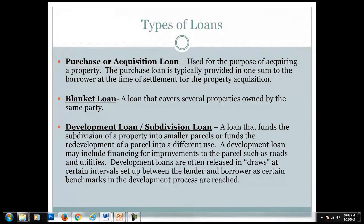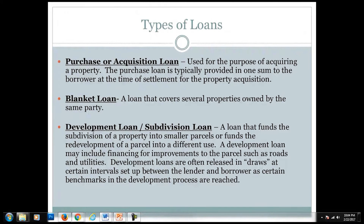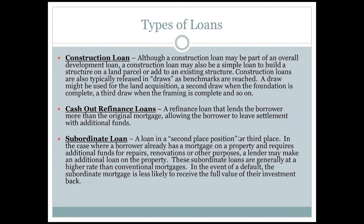There are many forms that commercial loans take. A purchase or acquisition loan is self-explanatory. A blanket loan is a mortgage that covers several properties owned by the same party — often used by banks or developers who buy large tracts of land, allowing a borrower to pay off portions and have portions of the property released incrementally. There are also development or subdivision loans, construction loans, refinance loans, cash-out refinance loans, and subordinate loans — loans in a second or third place position. When a borrower already has a mortgage and requires additional funds for repairs or renovations, a lender may make an additional loan on the property. These subordinate loans are generally at a higher rate than conventional mortgages.